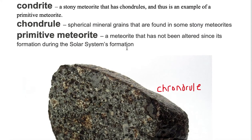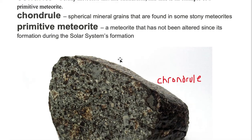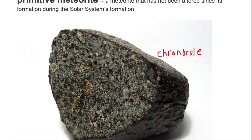What are chondrules? Chondrules are spherical mineral grains that are found in some stony meteorites. So if we look very closely in this image, we can see these spherical grains, which are your chondrules.